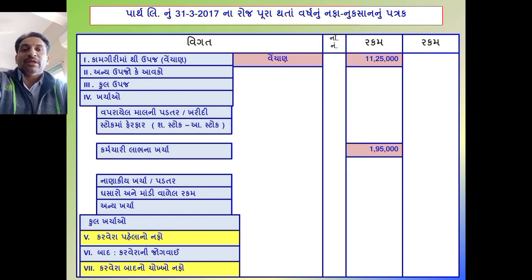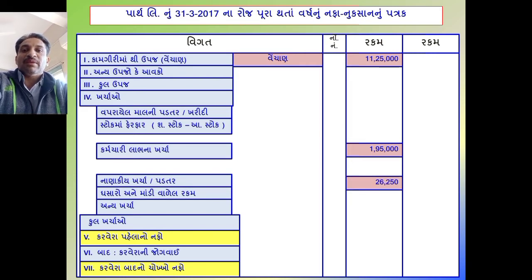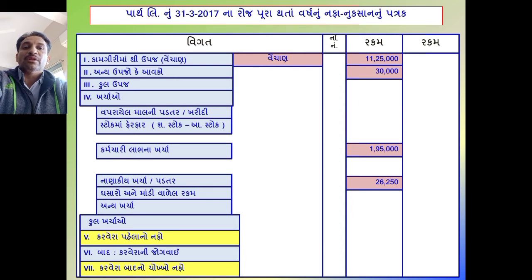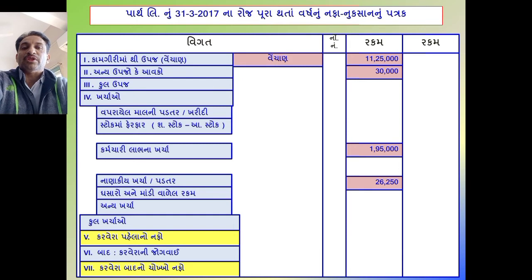વેચાણ, નફા-નુક્સાન ખાતા અને પડતરનો જે સિર્સક આપેલ છે, તે સિર્સકનો અહીં કુલ સરવાળો જ આપેલ છે. તેથી અહીં પેટા વિગત નોંધ્યા વિના સીધા રકમ નોંધો: છવ્વીસ હજાર બસ્સો પચાસ. જામીનગીરી પ્રિમીયમ એ જવાબદારીઓ સિર્સક છે, ત્યાં પણ કુલ સિર્સક આપ્યો છે, પેટા વિગત નોંધવાની જરૂર નથી.